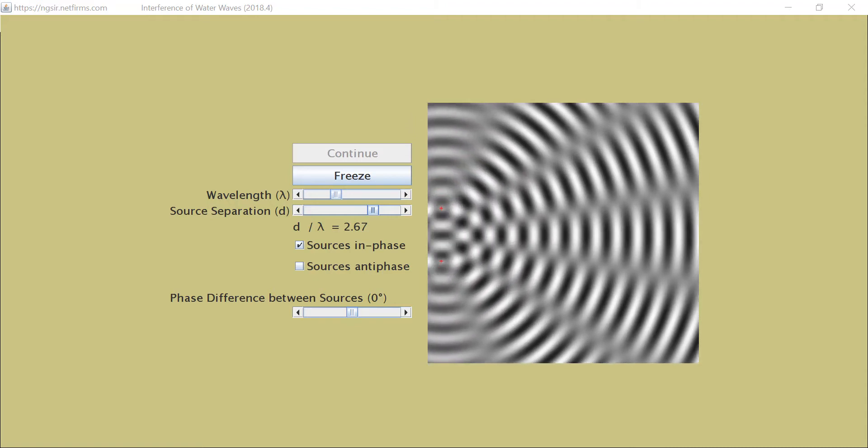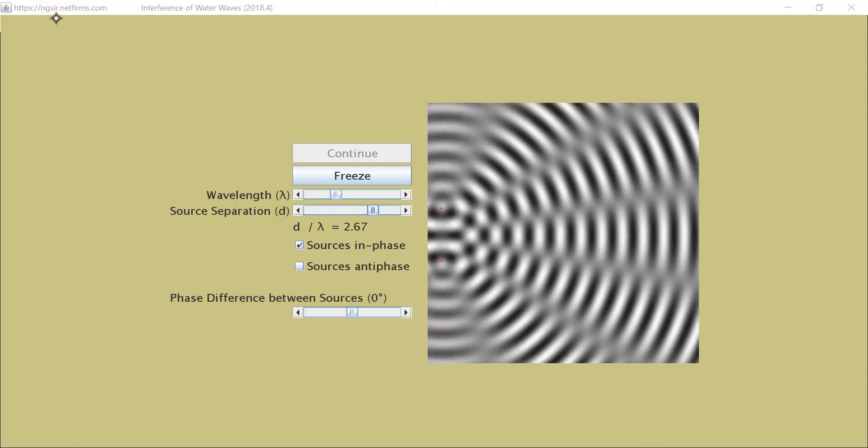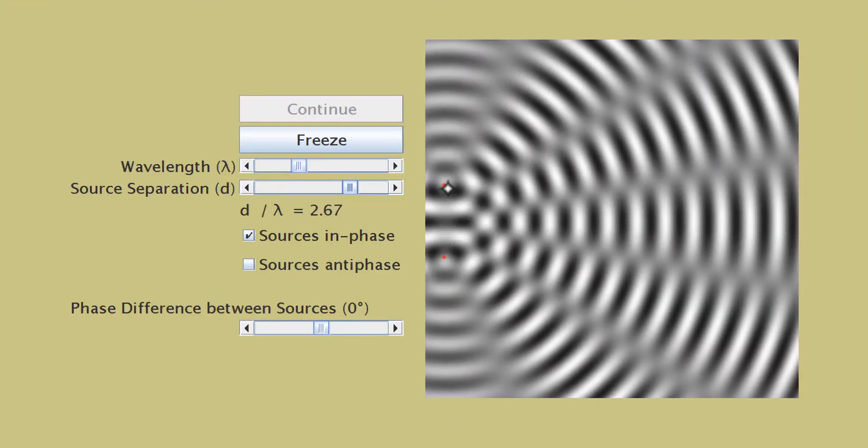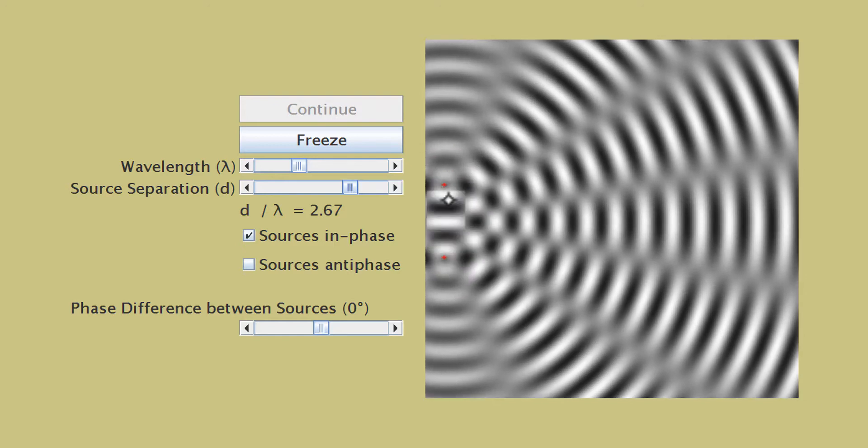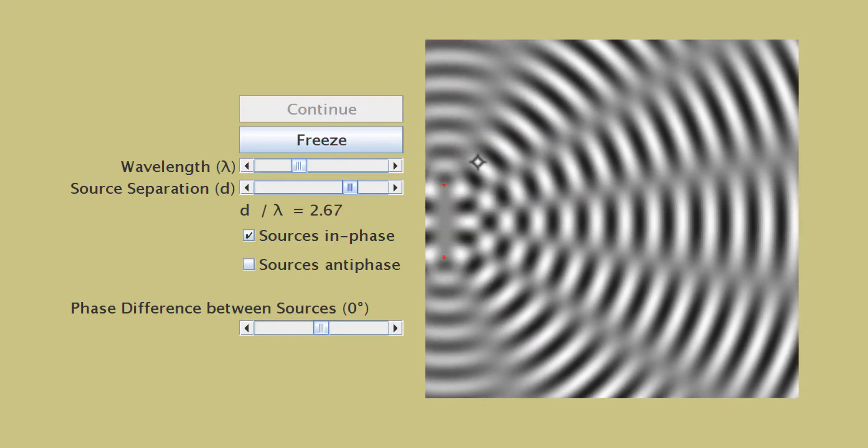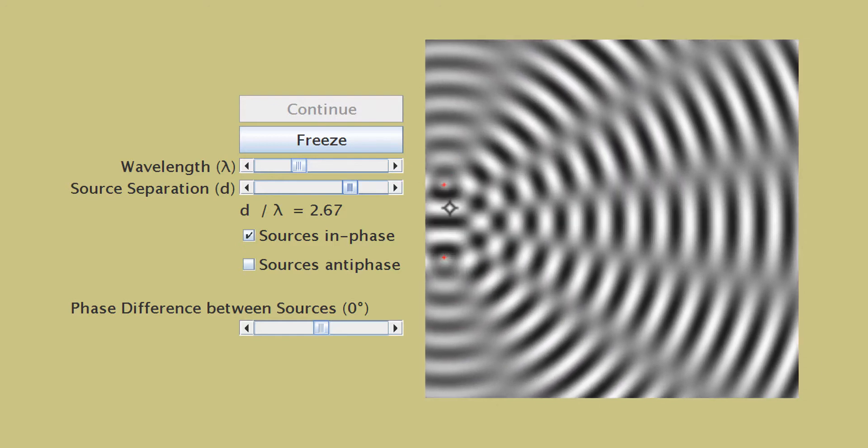So this one is written by ngsir.netfirms.com. We have two dippers here, and you can see the circular waves propagating outward from these two dippers.